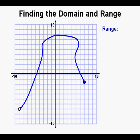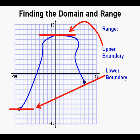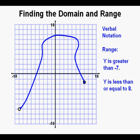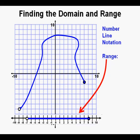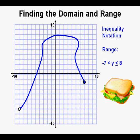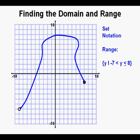Now let's take a look at the range of this relation. We look at the upper boundary and the lower boundary. We have an upper boundary at y equals 8 and a lower boundary at y equals negative 7. Using verbal notation, the range is y is greater than negative 7 and y is less than or equal to 8. On the number line we see the open circle for greater than negative 7 on the left and the solid point for less than or equal to 8 on the right, with a blue line segment filling in everywhere in between. The inequality notation is y greater than negative 7 and y less than or equal to 8. Set notation: y such that y is greater than negative 7 and less than or equal to 8. Interval notation: open parenthesis, negative 7, comma, 8, closing bracket.